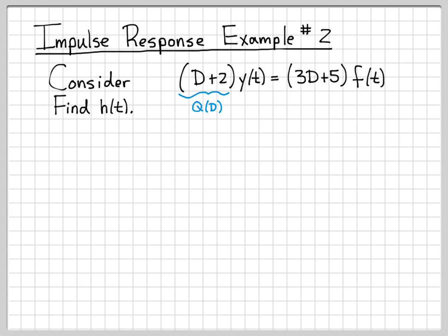So to do that, we need to pick off some important quantities. One is the polynomial Q(D). So this is the polynomial on the left that multiplies y. Looking at this, we can tell that it is a first order polynomial. So n is equal to 1 in this example.